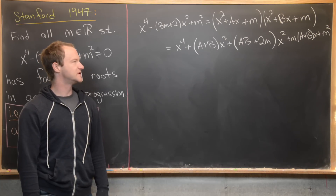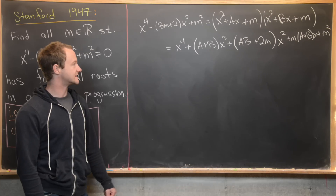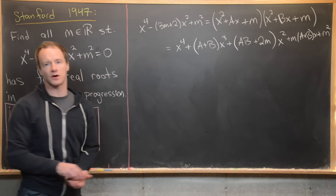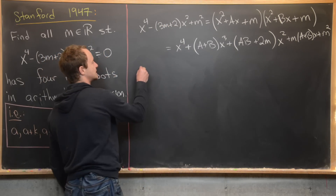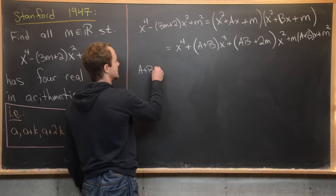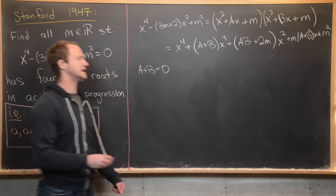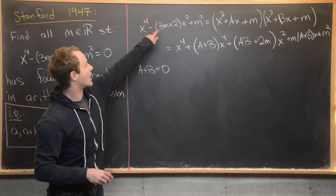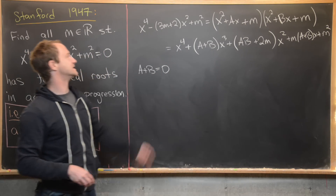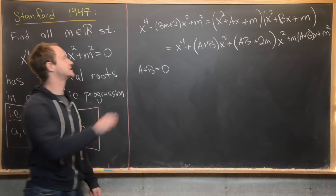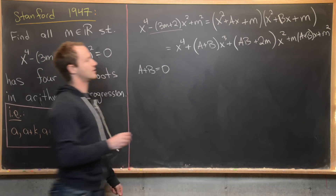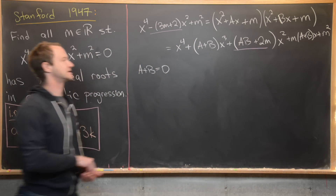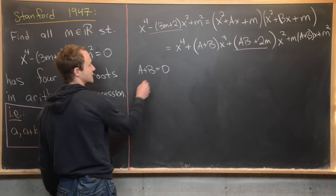Comparing coefficients on both sides: there are no x³ terms on the left, so a + b = 0. The x² term on the left is −(3m + 2), and on the right it is ab + 2m, giving another equation.